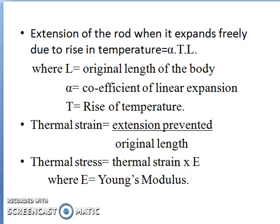What is thermal strain? Thermal strain is the ratio of the extension prevented to the original length. The extension prevented is the extension which the rod would expand freely if it is not arrested. Therefore, thermal strain = extension prevented / original length, where extension prevented = alpha × T × L. Thermal stress = thermal strain × Young's modulus E.